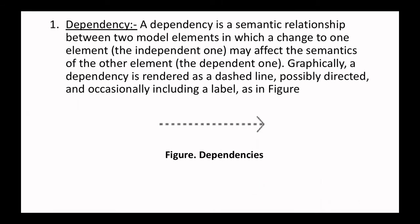The relationships in UML are classified into four parts: dependency, association, generalization, and realization. A dependency is a semantic relationship between two model elements in which a change to one element may affect the semantics of the other element. Graphically, a dependency is represented as a dashed line, possibly directed, and occasionally including a label, as shown in the figure.